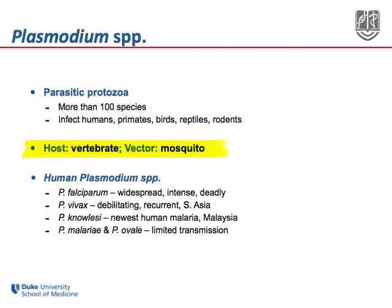For each of the plasmodium species, the host is one of the above listed vertebrates and the vector is one of many genera of mosquitoes, depending upon the plasmodium species and the vertebrate host.